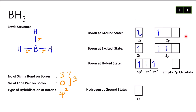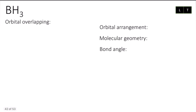Now continue with hydrogen at ground state — we have one electron, so I put one electron there. Now we are going to draw the orbital overlapping for boron. We need to show sp2, so the sp2 orbital arrangement is trigonal planar.